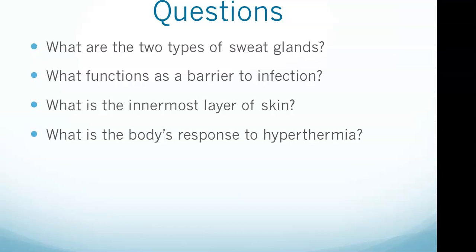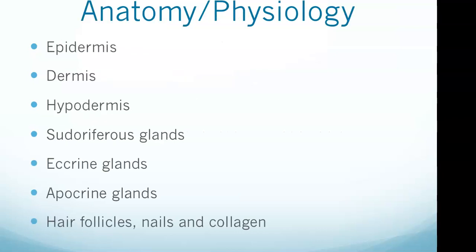Question two: what functions as a barrier to infection? It's the epidermis. The dermis though is the location of sweat glands and nerve endings. The hair follicles, along with sweat glands and nerve endings, are found in the dermis. The hypodermis, in addition to being the innermost layer of skin, contains blood vessels and adipose tissue.